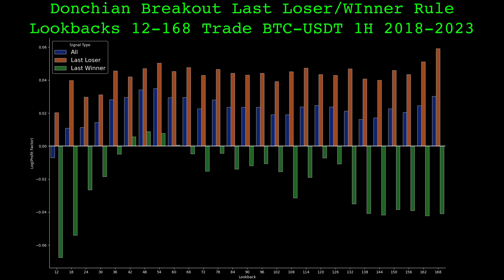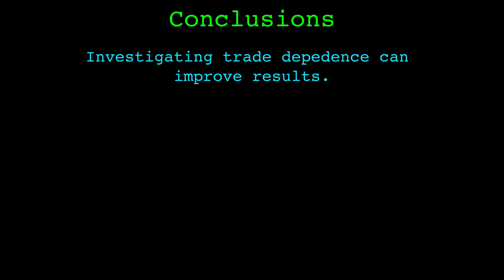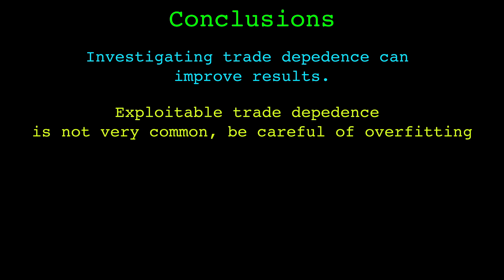By utilizing trade dependence we improved the results of the Donchian breakout strategy. I think it is worth investigating your own strategies to see if trade dependence is present. In my experience trade dependence is rather uncommon. I've only seen strong trade dependence on trend following strategies like the Donchian breakout. Keep in mind I only trade crypto, so your experience may vary, but the turtle traders certainly were not trading crypto and they found the same rule effective.